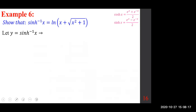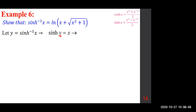We start by letting y = sinh⁻¹(x). By the definition of the inverse, sinh(y) = x. Using the definition of sinh, replacing x with y: (e^y − e^(−y))/2 = x. We use this definition and cross-multiply — thinking of the right side over 1 — giving us e^y − e^(−y) = 2x.